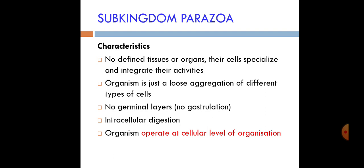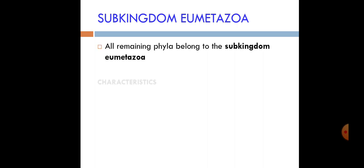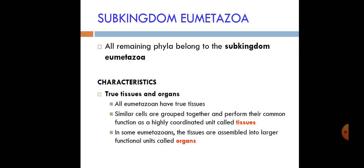Parazoa have no germ layers and no gastrulation. Gastrulation is the formation of a gastrula, and after gastrulation germ layers are formed — we'll discuss those later. Parazoa also perform intracellular digestion — they digest inside the cell. In other words, they operate at a cellular level of organization. The only phylum remaining in Parazoa is the sponges — the Porifera.